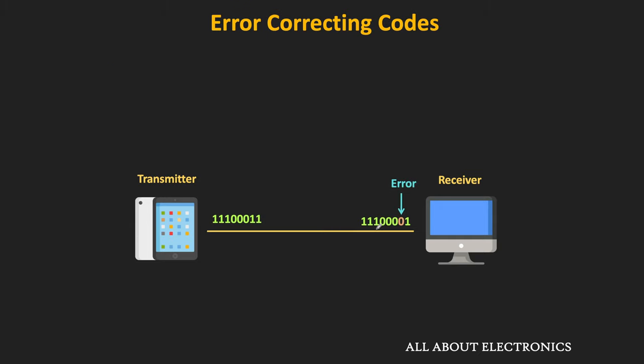In other words, it is not possible to correct the error using parity. But there are some codes using which it is also possible to correct the errors. In the next video, we will learn about one such error correcting code. In the upcoming videos, we will also see the circuit of the parity generator as well as the parity checker. I hope in this video you understood about the parity bit and how it is possible to detect the error using it.